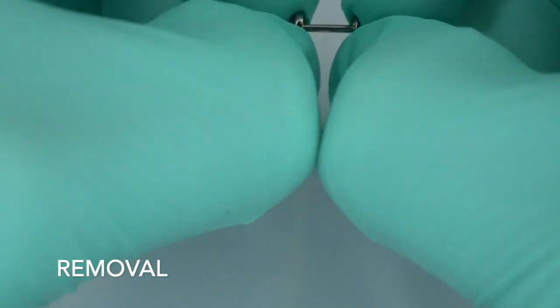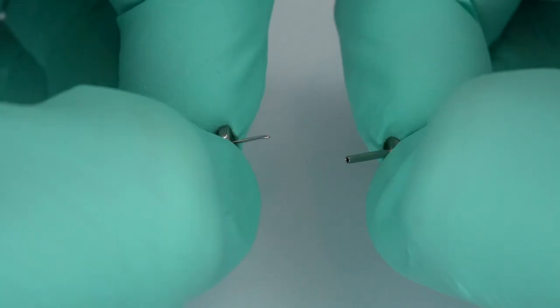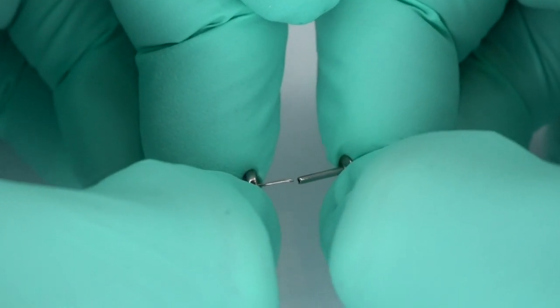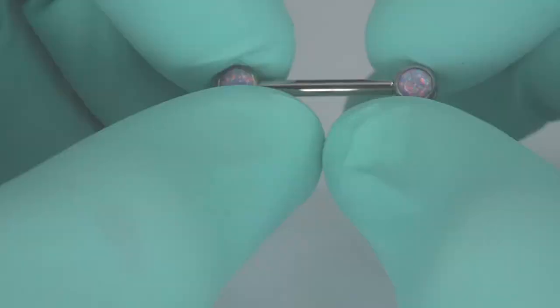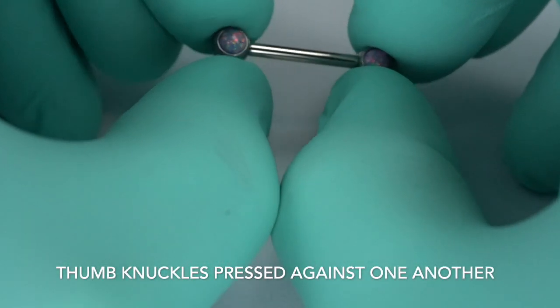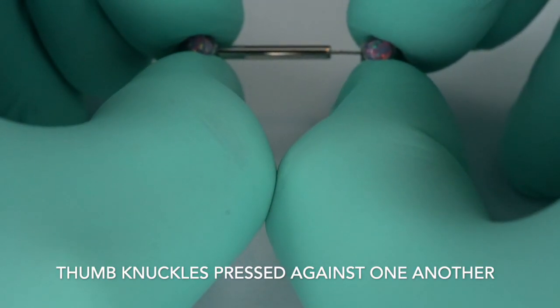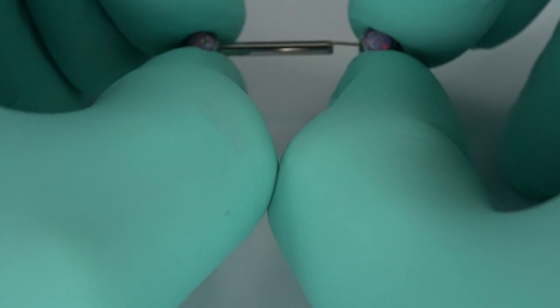To remove the end, you'll want to again grasp the end with a thumb and forefinger as well as holding the opposite end of the post, which is usually the disc or the flat back, with your thumb and forefinger. Then you can pull apart with equal pressure. If this isn't working well for you, you can use leverage to apply pressure against your own thumbs. This pressure gives you a lot more strength and makes the end much easier to remove.